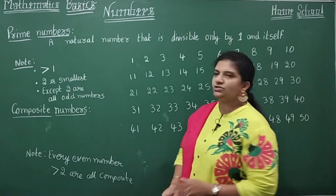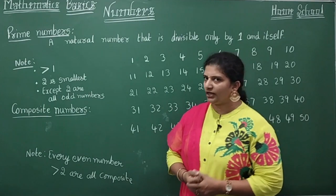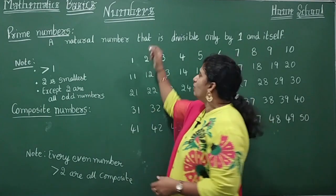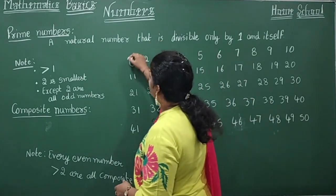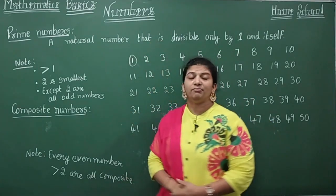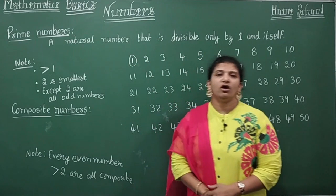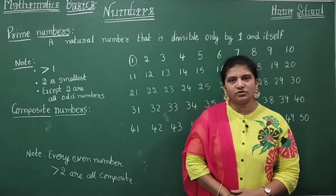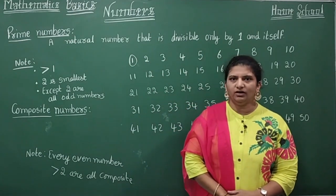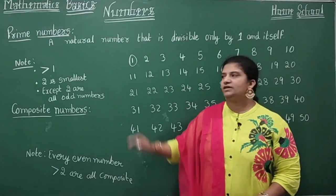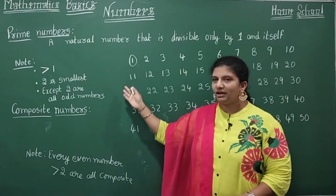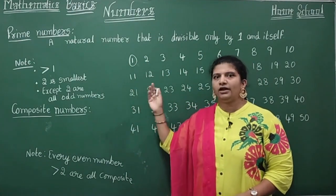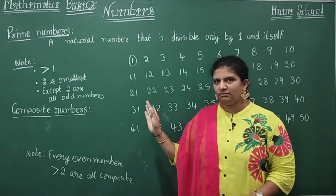You have to keep in mind: one is neither a prime nor a composite number. We cannot say that it is a prime number or a composite number, so one is not considered in either category.